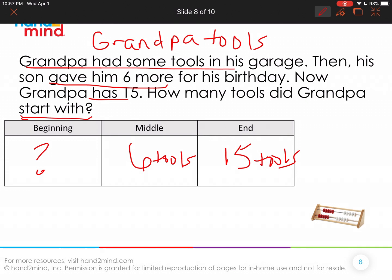So can we write a number sentence to help us? Well, we know that he started with some, we don't know how many, but we know that when someone gives us something that's getting more and that's joining. So that's represented with addition. That's the six. And then he ends up with 15. So something plus six equals 15. So I want you to try to figure that out.